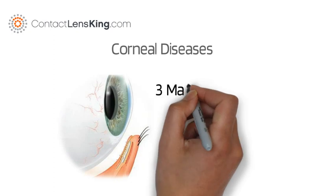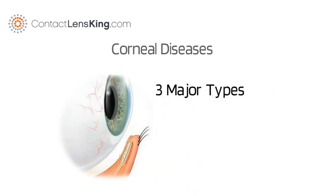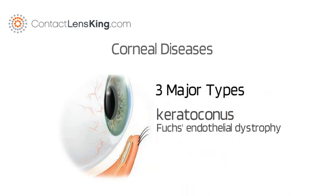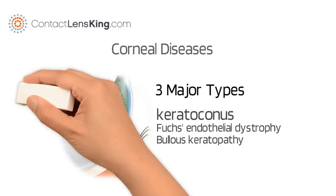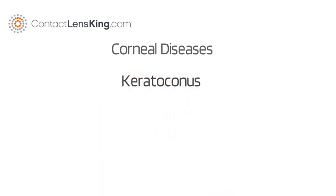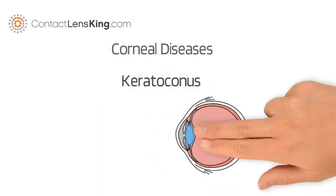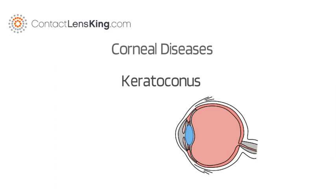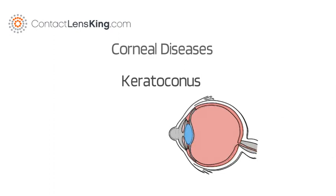The three major types of corneal disease include keratoconus, Fuchs endothelial dystrophy, and bullous keratopathy. Keratoconus is the misshaping of the cornea, leading to it bulging out. This can distort how light is focused within the eye.